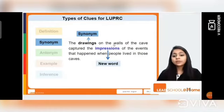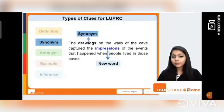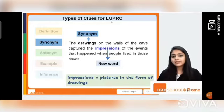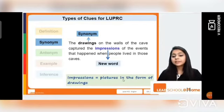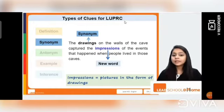'The drawings on the walls of the cave capture the impressions of the events that happened when people lived in those caves.' Here 'impressions' is the new word and 'drawings' is the synonym. By this I can understand they mean something similar — impressions are pictures in the form of drawings. These are the similar-meaning words you can find within the text.